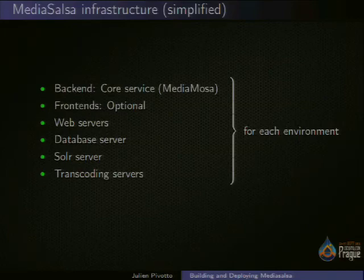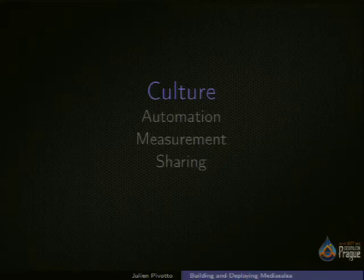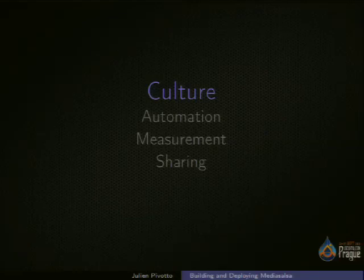So what is DevOps about? If you are in the DevOps track you might probably know, but DevOps is about four things: cultural changes, automation, measurement, and sharing. We will go step by step inside this to see how we implemented the project. The project is only one year and maybe six months old, so let's see where we are at the moment.